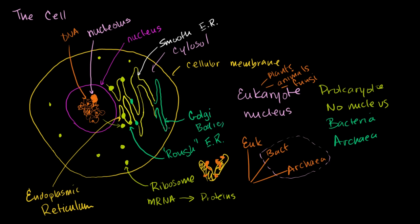In free ribosomes, mRNA gets there, gets translated to proteins, and the proteins just float around in the cytosol. But what if we want proteins that should end up in membranes or outside the cell? That's where the endoplasmic reticulum and Golgi bodies come into play. mRNA comes outside the nucleus and can be translated by the ribosomes in the rough ER.